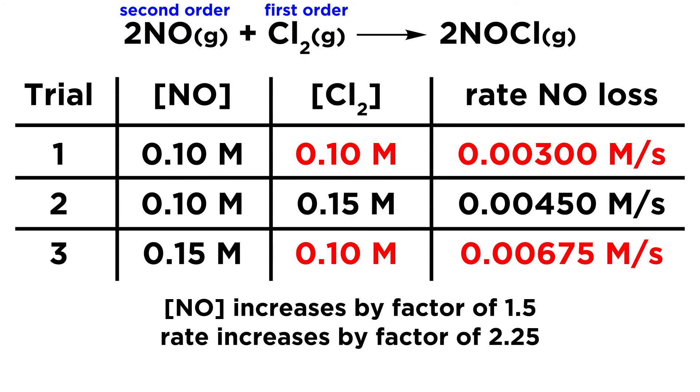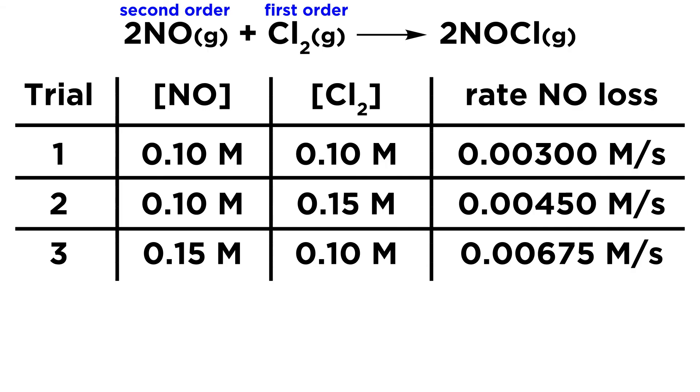Then we would say that the NO concentration increases by a factor of 1.5, the rate increases by a factor of 2.25, and 2.25 equals 1.5 squared. So because of that 2 right there, we know it is second order in NO. So in other words, if the rate increases by a factor that is equivalent to the factor by which the concentration increases, that is first order.